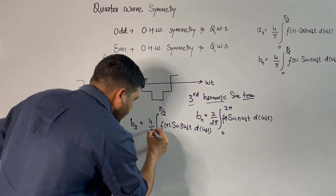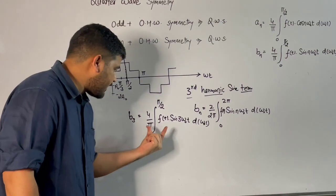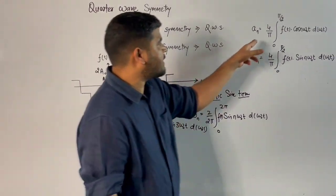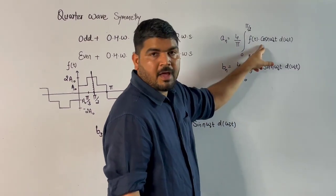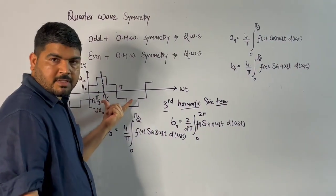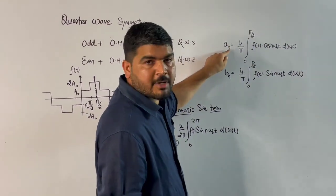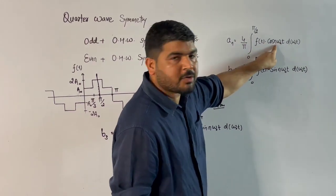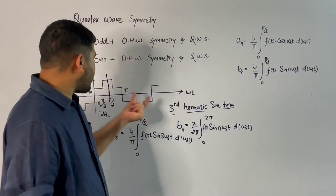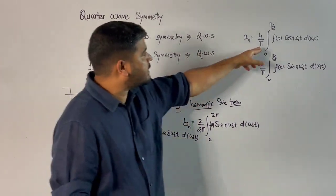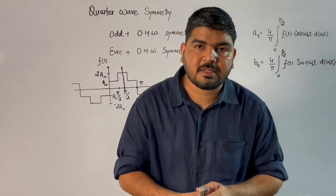Here the coefficient should be 4/π. So the standard expressions are: Vn = (4/π) ∫₀^(π/2) f(t)·sin(n·ωt) d(ωt) for odd signals, and An = (4/π) ∫₀^(π/2) f(t)·cos(n·ωt) d(ωt) for even signals. To calculate any harmonic amplitude, put n equal to the desired harmonic and integrate under one quarter. The advantage is you only need to break the integration into two parts instead of many, saving significant calculation time.